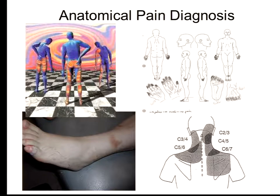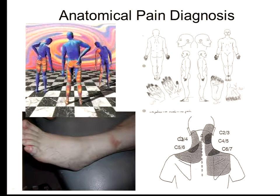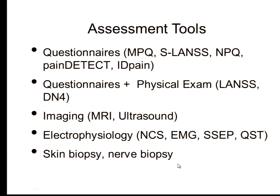So how do we do a pain diagnosis? It's really difficult sometimes. We find body positions or diagrams, or we do allodynia points, so we know the distribution of trigger points or facet joints, but we don't really know how to do it precisely. We have questionnaires — some specifically for neuropathic pain are very good, such as the Leeds questionnaire and mDetect. We do questionnaires and physical examination, including the DN4 — Douleur Neuropathique 4. We use imaging — MRI, neuroimaging, nerve imaging ultrasound — and we do electrophysiology studies, skin biopsies, and nerve biopsies. So we have a lot of tools.